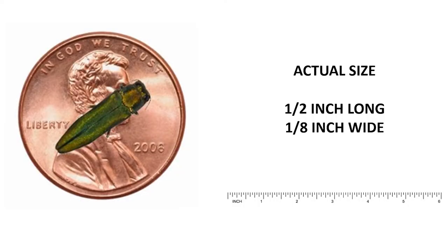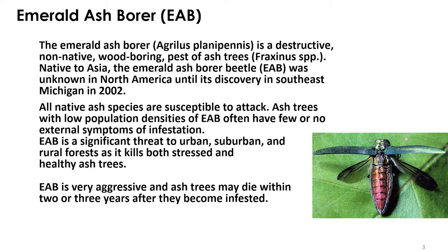We want to emphasize the size of the Emerald Ash Borer by showing the image of the penny. The actual size is a half inch long and an eighth of an inch wide. The beetle is very small. There are many beetles of the same color that are much larger. The Emerald Ash Borer is a destructive, non-native, wood-boring pest of ash trees.